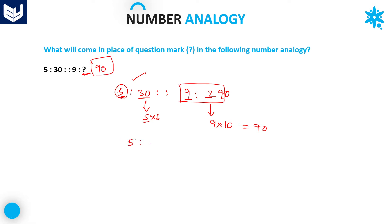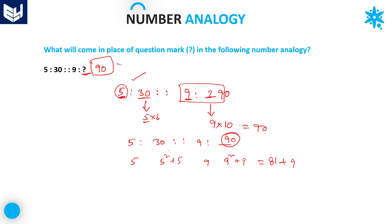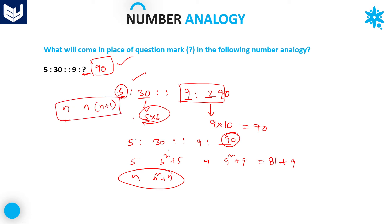For this same question, one more logic is also there. You will get the same result. The alternative logic is: 5 squared plus 5. You can also use the squares logic. Here it is 9, so 9 squared plus 9. 9 squared value is 81. 81 plus 9 is equal to 90. Here also, you get the same result. Both logics are the same: the product logic n into (n+1), and the squares logic n squared plus n, are equivalent.